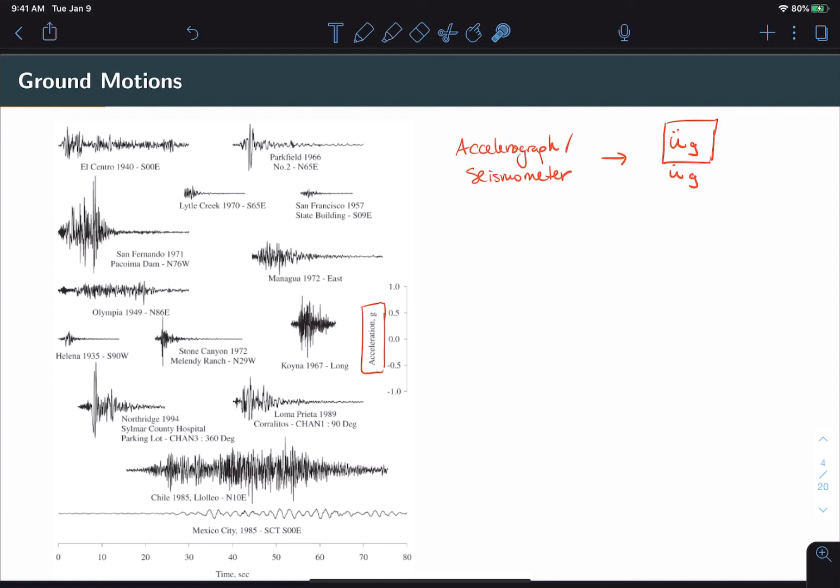In the particular case of the Mexico City record this happened to be the case because the local soil conditions at the measurement location were actually very soft. So, the big picture question here is how do we simplify structural responses to such a wide variety of possible ground motions and loading functions? And ultimately, how do we inform the design of structures which can be subject to these types of loadings?